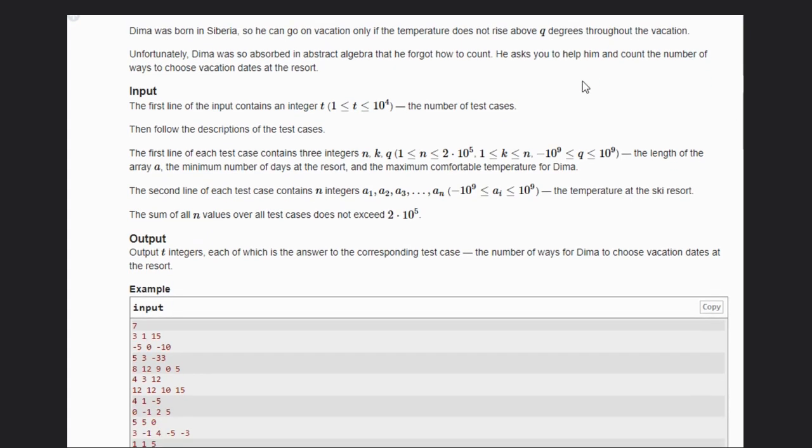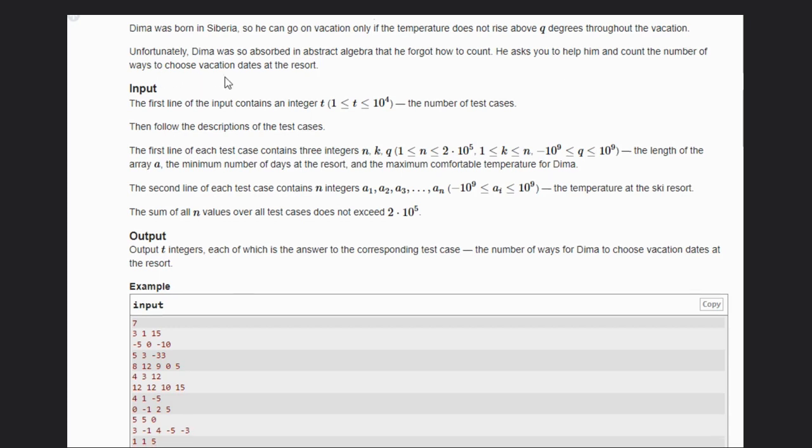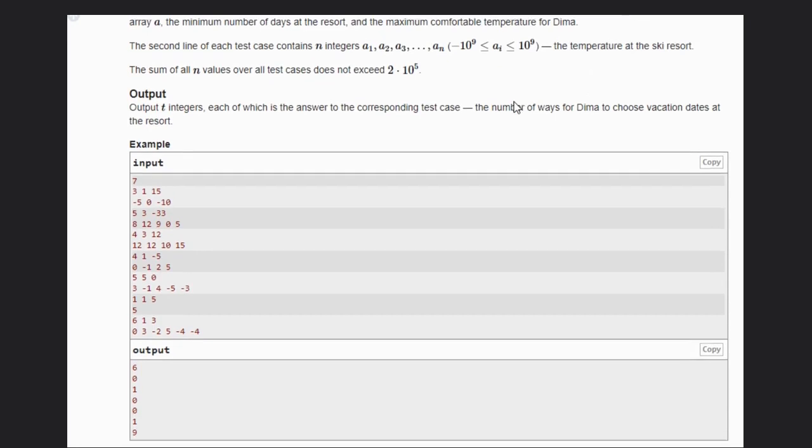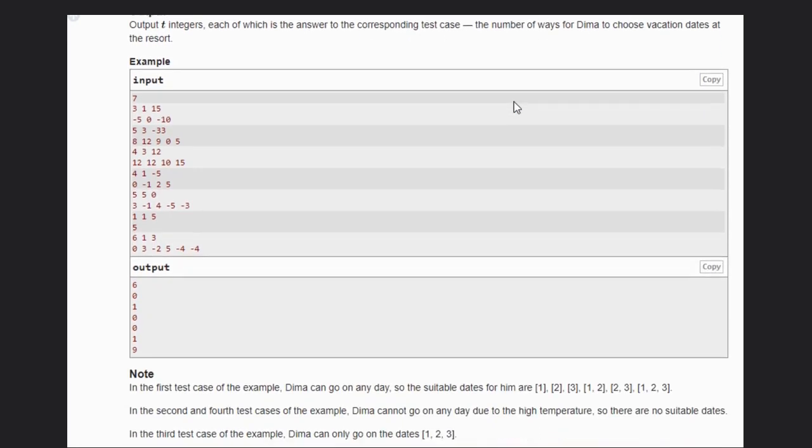He will go only when there are at least K days which has temperature less than Q degrees. This is the case and we have to count the number of ways to choose the vacation dates at the resort. Let's see some examples to understand clearly then we will discuss the solution approach.